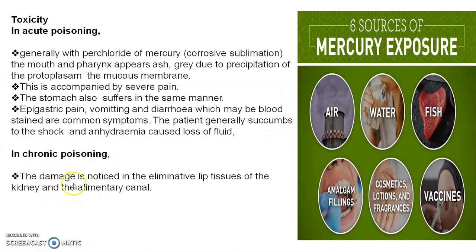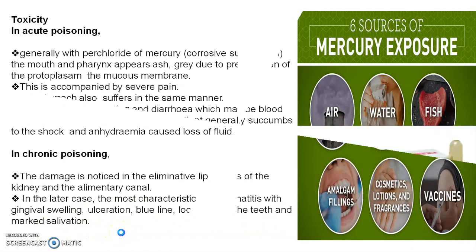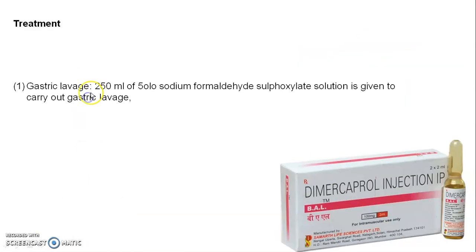In chronic mercury poisoning, damage is noticed in the eliminative tissues of the kidney and alimentary canal. The most characteristic sign is stomatitis — infection and damage in the mouth — with gingival swelling, ulceration, blue lines, loosening of the teeth, and marked salivation. These are the toxic effects of mercury.